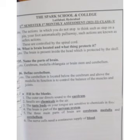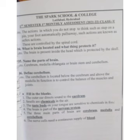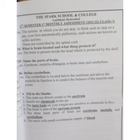Fill in the blanks. The outer ear directs sounds to the — air drum. Number two: Smells are chemicals in the air. Number three: The taste buds on your tongue are sensitive to chemicals in food. Number four: The brain is part of the nervous system. Number five: The three main parts of the brain are Cerebrum, Medulla, and Cerebellum. Number six: The nerve cells need a continuous supply of — blood. Hope you all understand, thank you so much.